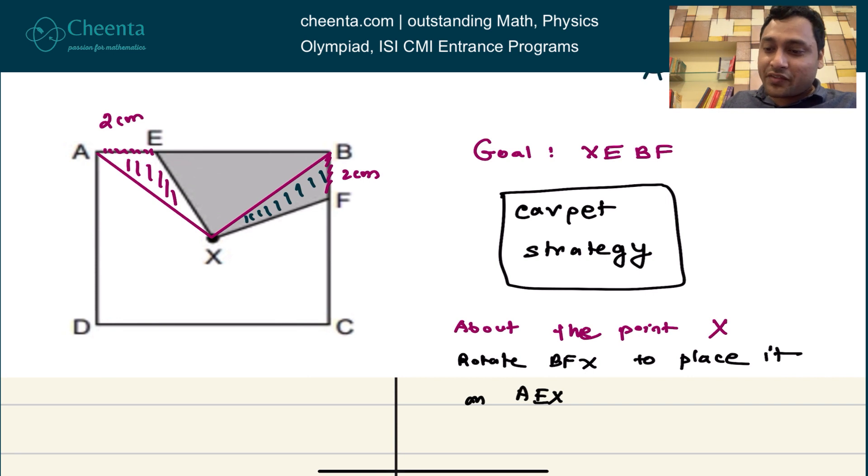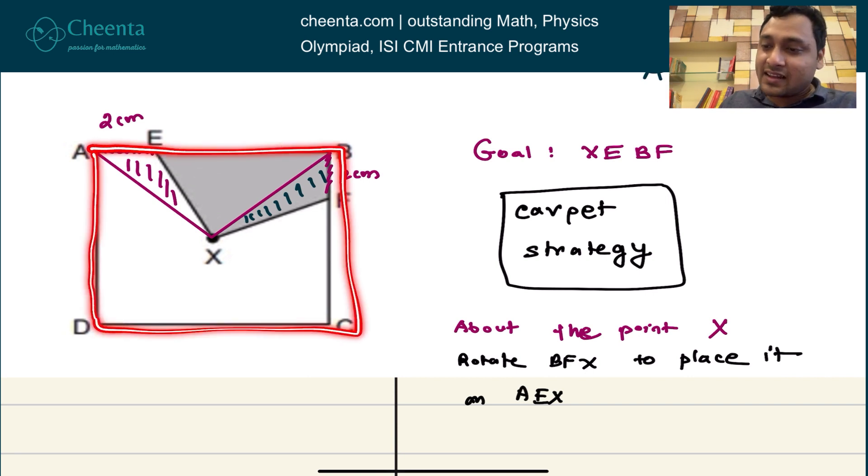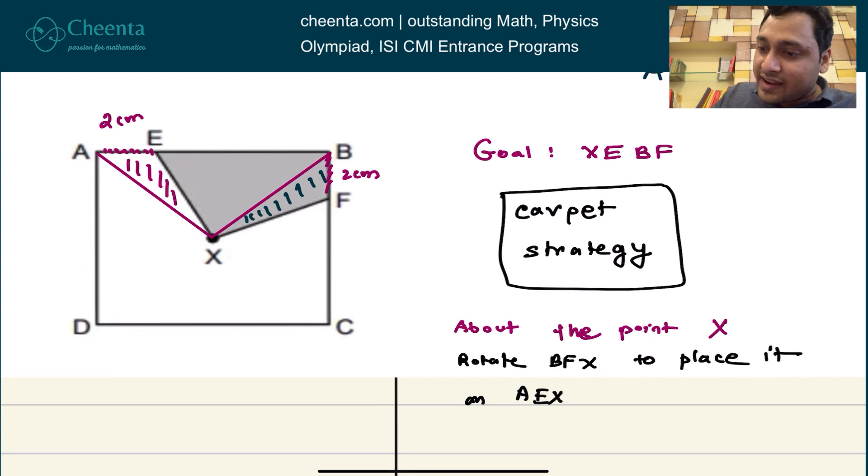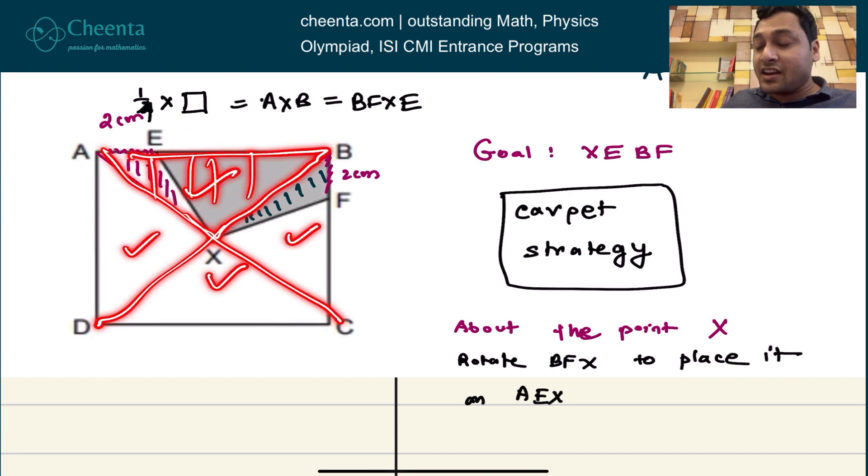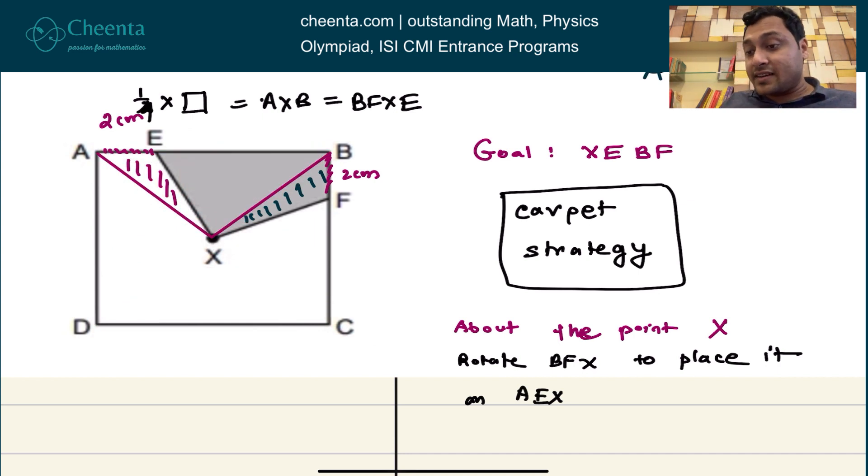So area of this triangle AXB, which is equal to the area of BFXE, and that is one-fourth of the area of the square. Because of course, if you draw the two diagonals, the square is split up into four equal triangles, and this one is just one of them, right? And you know the area of the square. The area of the square is 8 times 8, which is 64. So can you give me the final answer in the comment section?